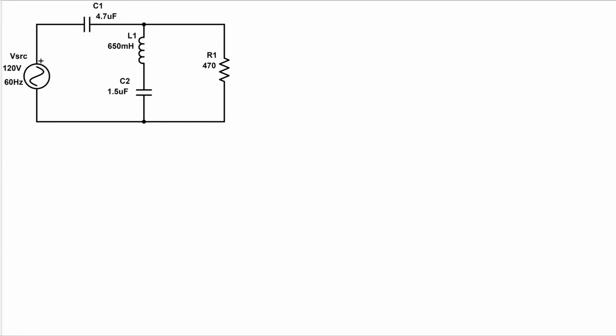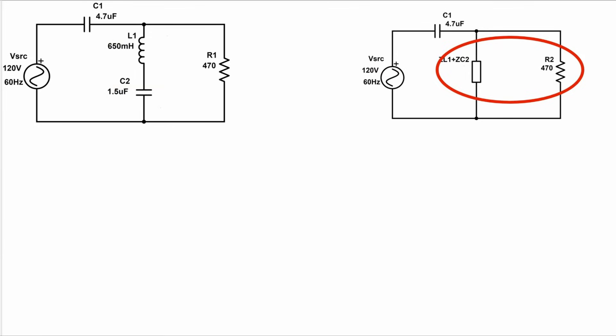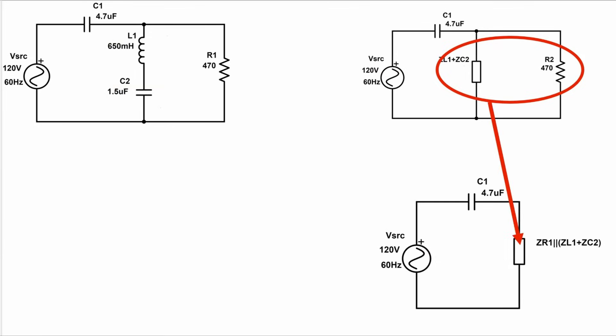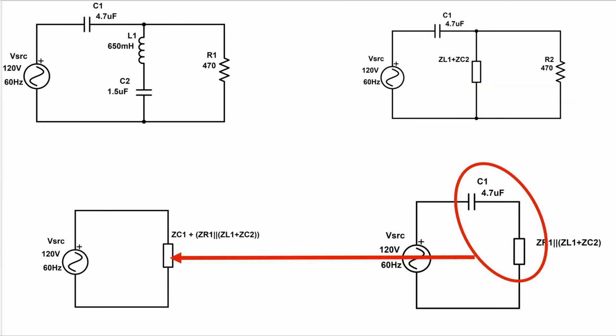More specifically for this circuit, I'm going to start by determining the impedances of each of the components, then begin combining components to create equivalent circuits. I'll take this inductor and capacitor and combine them together to create this equivalent circuit, then take these two components and combine them together to create this equivalent circuit, then combine these two components together to create this equivalent circuit with a single equivalent impedance.